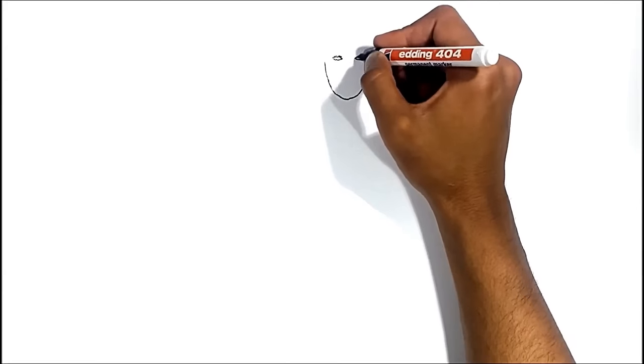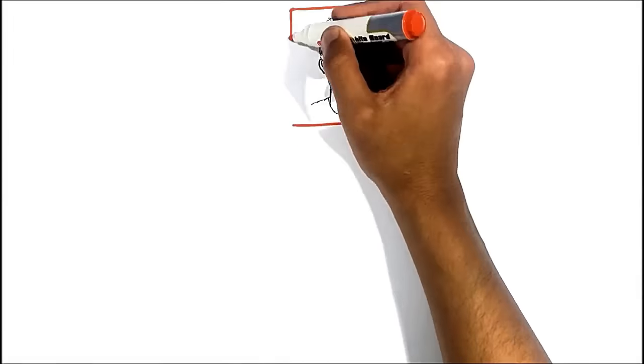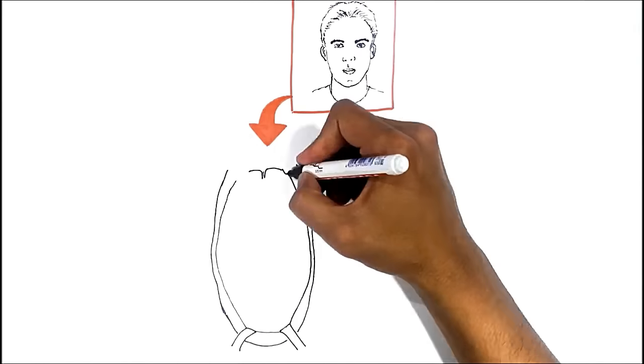We will take a look at the oral vestibule and the oral cavity proper and all structures of the oral cavity by drawing sections from three different angles. First, let me draw the anterior view.